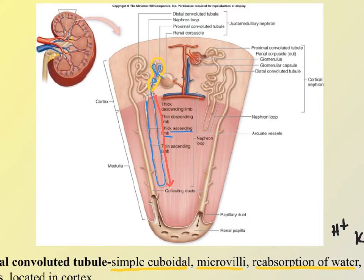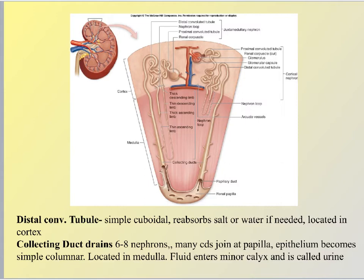Continuing on, the ascending limb gives rise to the area called the distal convoluted tubule, which is also carrying filtrate. The distal convoluted tubule is lined with simple cuboidal and is able to reabsorb salt or water if needed. This section of the tube is only located in the cortex.